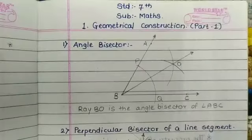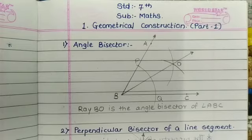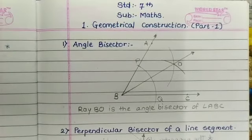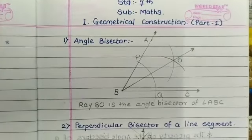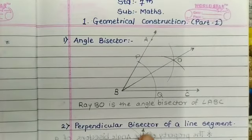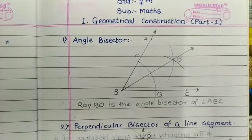This angle PMB is 90 degrees, therefore it is called a perpendicular bisector. Today we learned two constructions: the angle bisector and the perpendicular bisector. Thank you.